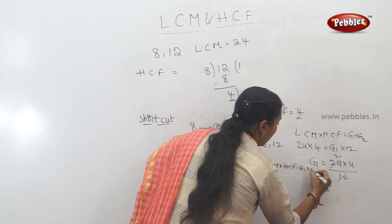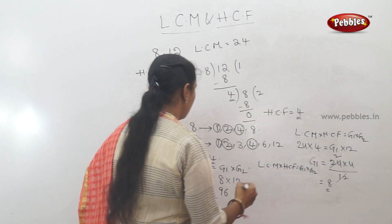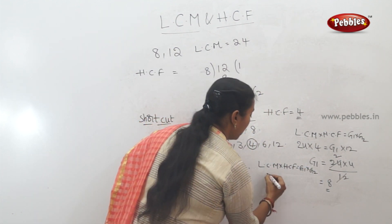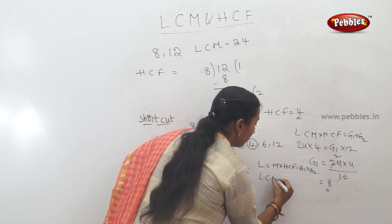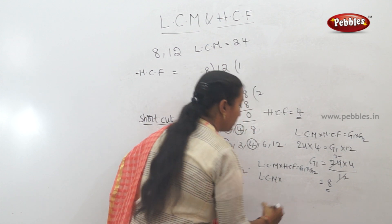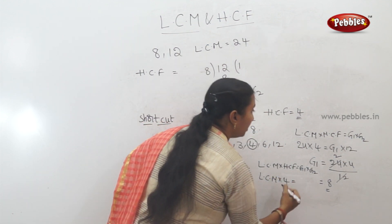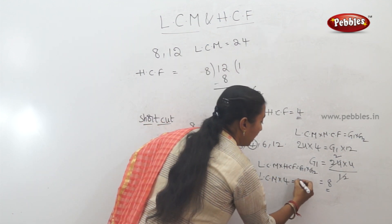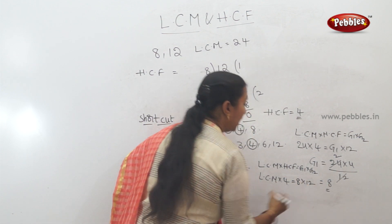This is your formula. If HCF is 4, and the two numbers G1 and G2 are 8 and 12, we can find out the LCM. HCF is 4, G1 is 8, and G2 is 12.